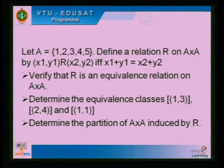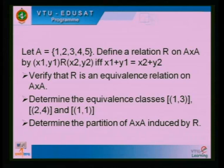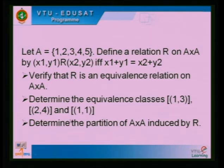In summary: I have given two examples — one where a relation is given and you find the induced partition, and another where the partition is given and you find the equivalence relation. A very important upcoming question involves A = {1,2,3,4,5} with a defined relation — verify three conditions. This is a most important question; there is insufficient time today, so we will start with this problem in tomorrow's class.